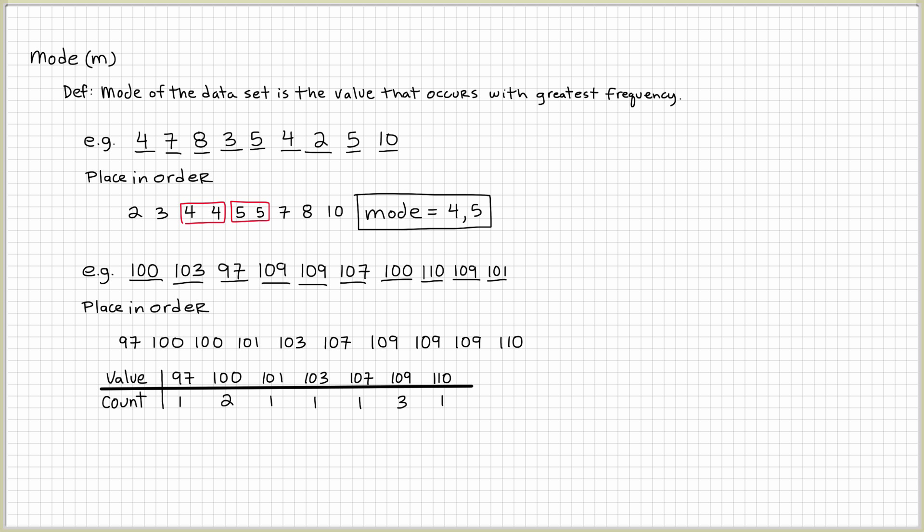Sometimes they'll just give you the table and then they'll ask you, hey, what's the most frequent or what's the mode? And you can tell very easily by looking at the table that there are three 109s. So, that must mean that the mode is 109.